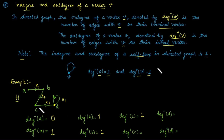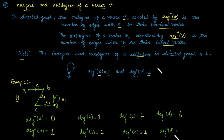In-degree of vertex c: how many edges are coming towards c? That is one. Out-degree of vertex c: how many edges are going away from c? That is one. For vertex d, the in-degree is two — one due to edge e3 and one due to edge e4. The out-degree of vertex d is one, due to the self-loop.